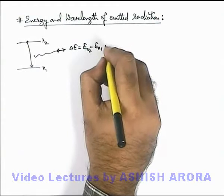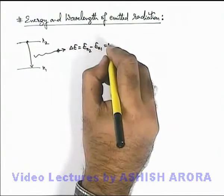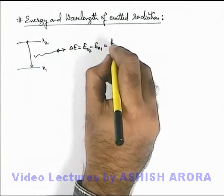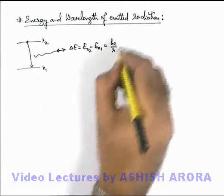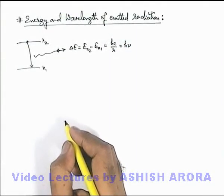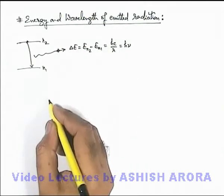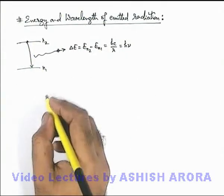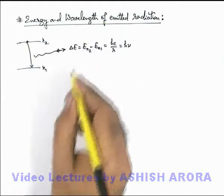And here this energy is emitted in form of a photon, so if the radiation wavelength is lambda, it can also be written as hc by lambda, or h nu if nu is the frequency of this photon. Now we can easily calculate the amount of energy for a given transition by substituting the values of En2 and En1.